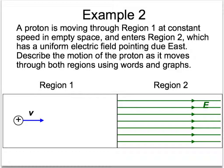Another example, this one takes it a little further. A proton is moving through region one at constant speed in empty space, so no field in region one. And it enters region two, which has a uniform electric field pointing due east that way. Describe the motion of the proton as it moves through both regions using words and graphs. Now you should be able to do the word part for sure, so why don't you pause the video, try the word part, and I'll have it written on the screen when you come back. Pause the video, write in words what will happen once the proton enters region two.